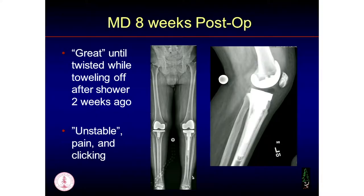He came back at eight weeks — usually I get folks in at six weeks, but he was a little late. He said he was great at six weeks, then got out of the shower, was on his left leg, twisted, and since then had some pain that quieted down but returned, felt a little unstable, and he's feeling some clicking. These are his eight-week post-operative x-rays. I'm scrutinizing the polyethylene there — I'm wondering if it's seated, or if it's kind of squirting out the front.